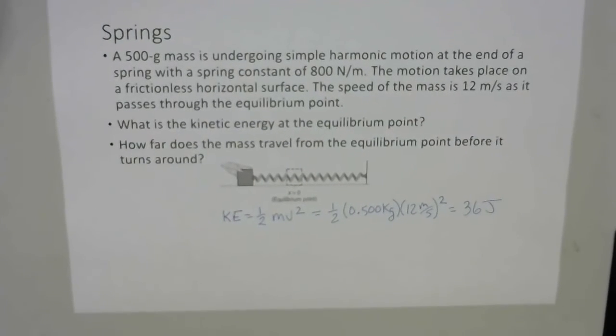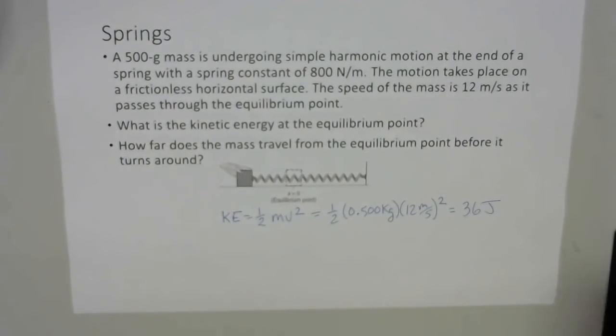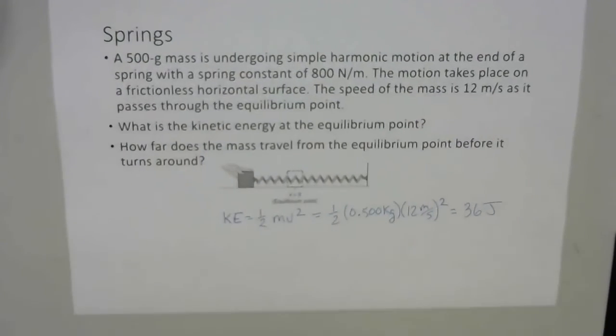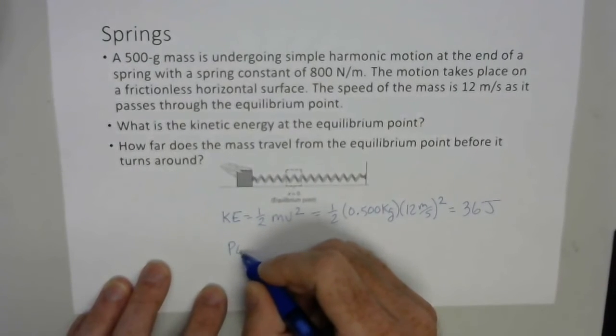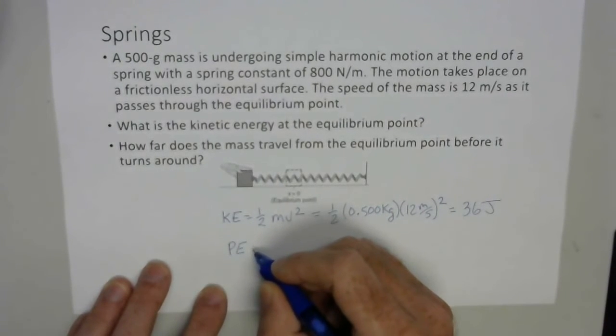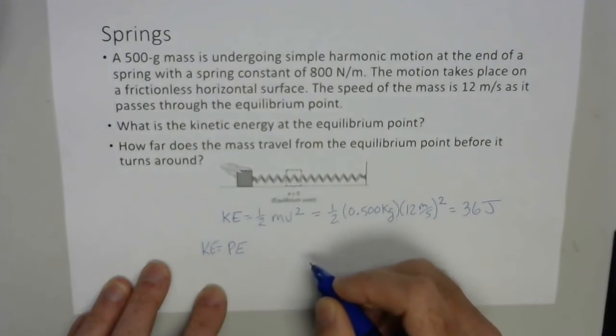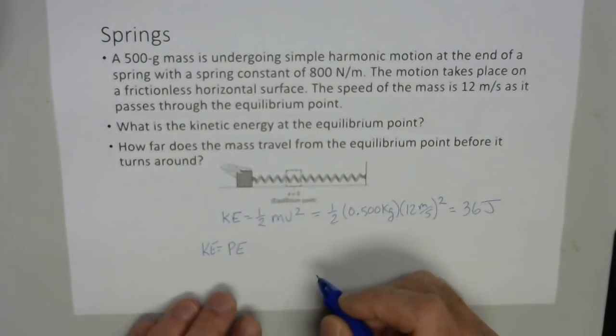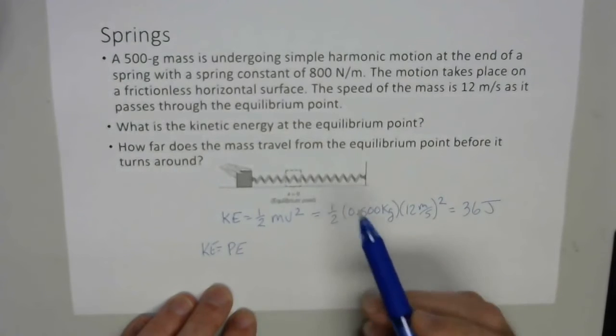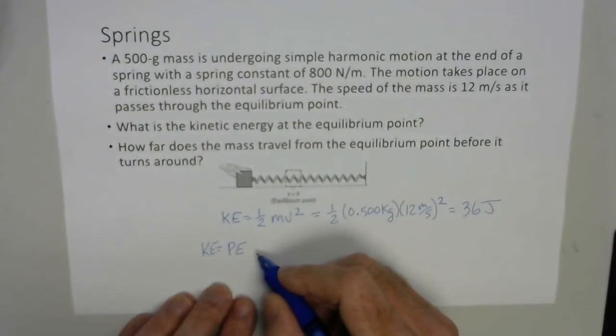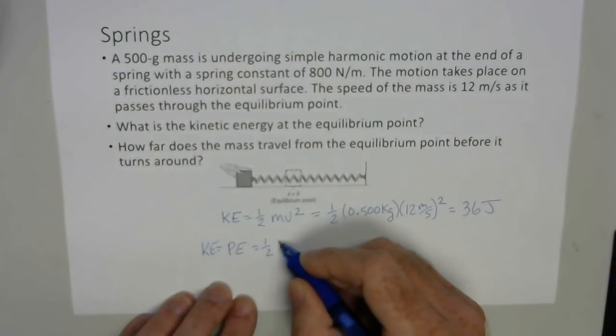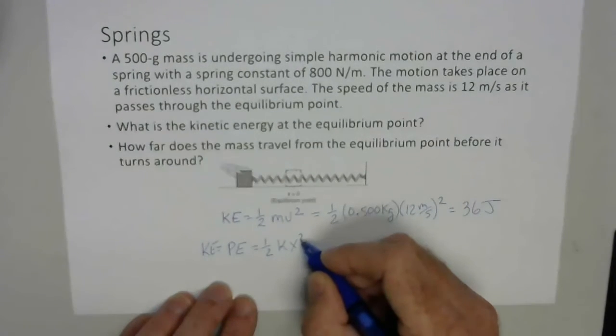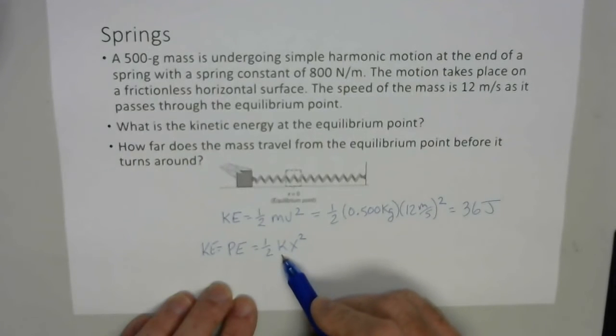Now, ideally speaking, the potential should equal the kinetic. So the potential energy of the spring, which should equal the kinetic energy that was imparted, because I have maximum kinetic energy at the equilibrium point, should be one-half kx squared, where k is your spring constant, x is the displacement.